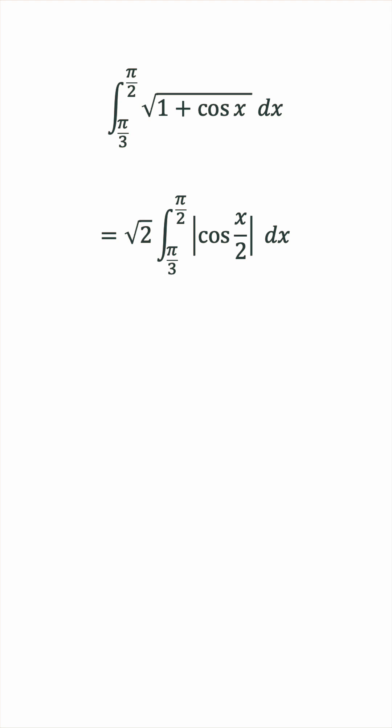The interval we're integrating over is from pi over 3 to pi over 2. We know that cosine x over 2 is positive on this interval, so only now can we remove the absolute value.